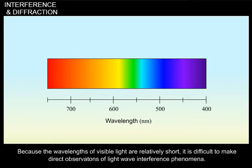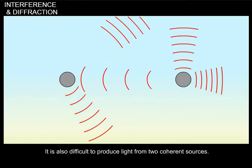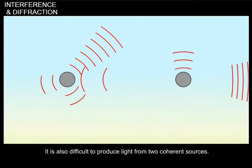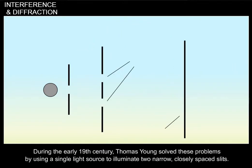Because the wavelengths of visible light are relatively short, it is difficult to make direct observations of light wave interference phenomena. It is also difficult to produce light from two coherent sources. During the early 19th century, Thomas Young solved these problems by using a single light source to illuminate two narrow, closely spaced slits.